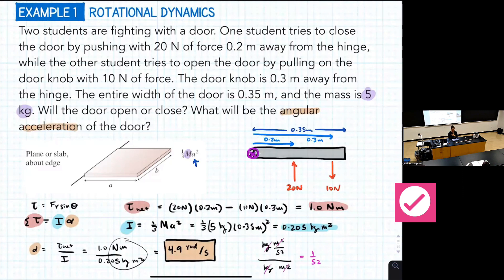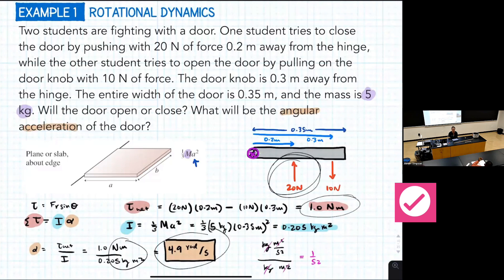The angular acceleration is positive, so the door is going in the positive (counterclockwise) direction — the person pushing wins, which is actually what happened in our demonstration. Both our net torque and angular acceleration end up positive. Always good to reference back to what the actual question was asking.